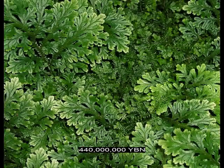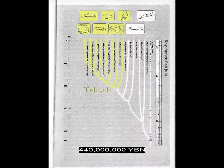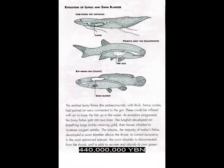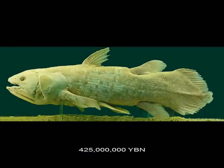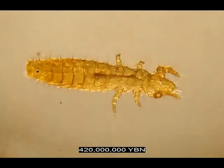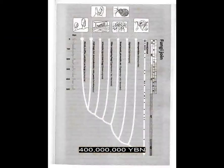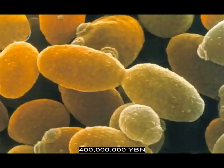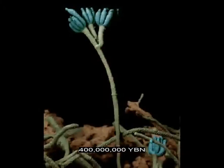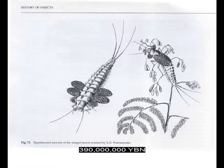Vascular plants evolve. Ray-finned fishes. The first lung evolves. Lobe-finned fish. Arthropod hexapods — six legs, includes all insects: bristletail and silverfish. Fungi Ascomycota — yeasts, truffles, penicillium, morels. The first flying animal — an arthropod insect. Ancestor of all winged insects: Pterygota — mayflies, damselflies, dragonflies.